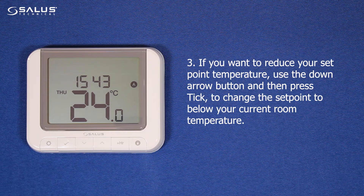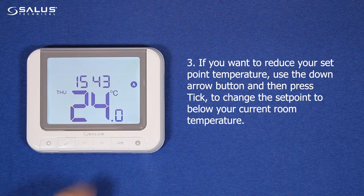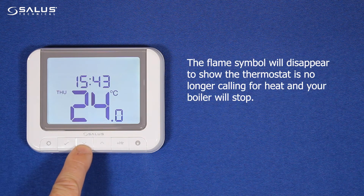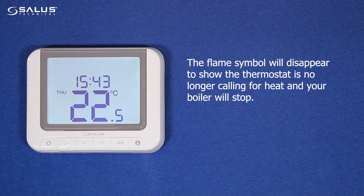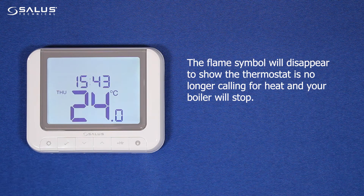3. If you want to reduce your set point temperature, use the down arrow button to change the set point to below your current room temperature. The flame symbol will disappear, to show the thermostat is no longer calling for heat, and your boiler will stop.